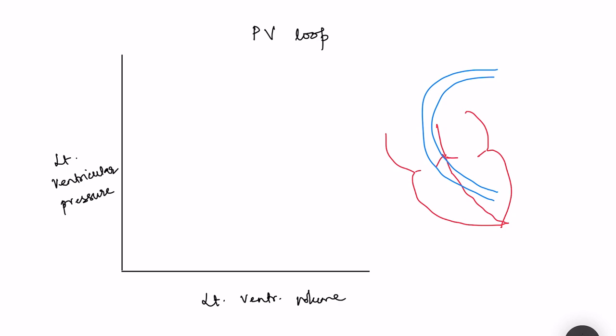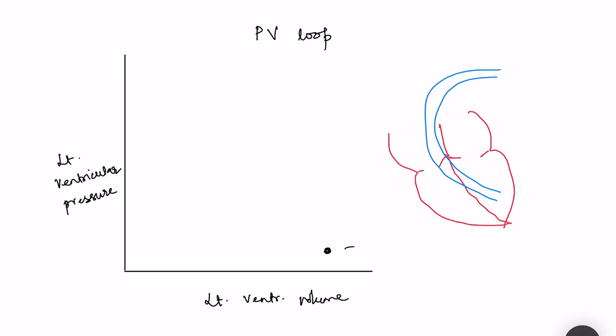Let's start with a point when the ventricle is completely filled, that is at the end of diastole. At that point, the volume present in the left ventricle is the end diastolic volume, approximately 120 ml. The pressure present in the ventricles at this time is very very low — close to zero, around two to three millimeter mercury is the left ventricular pressure.